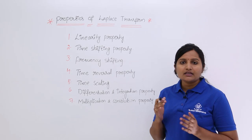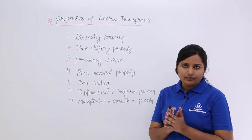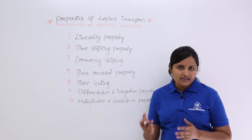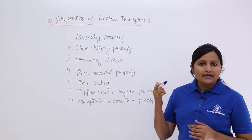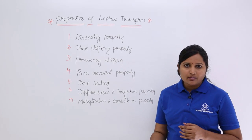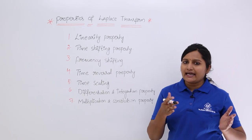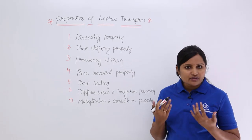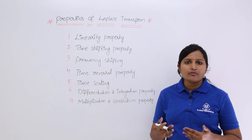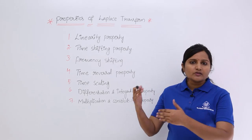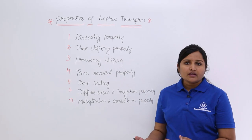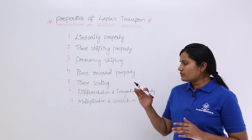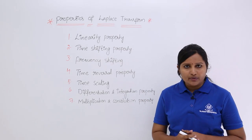Coming to the time scaling property. In this property, if you scale time — for example, if you are having x(t) whose Laplace transform is X(s) — and if you scale your time like x(2t) or x(3t), then how the spectrum is going to change and how much effect there is. That we are going to discuss in the time scaling property.